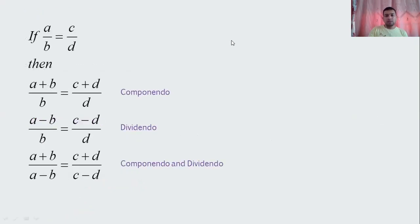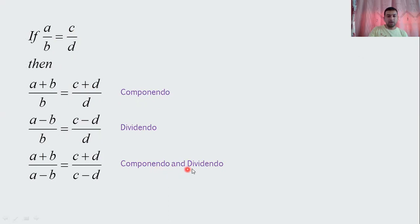If a upon b equals c upon d, then by the componendo rule: (a+b)/b = (c+d)/d. Dividendo rule: (a−b)/b = (c−d)/d. Componendo and dividendo: (a+b)/(a−b) = (c+d)/(c−d). You can pause the video here and note down these basic rules of ratio.